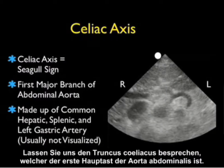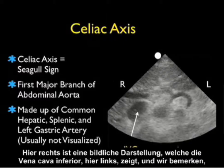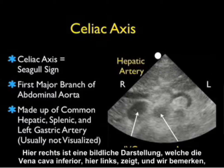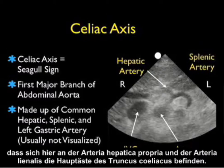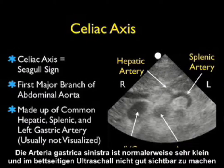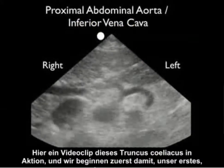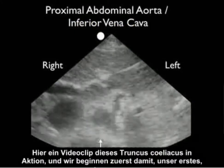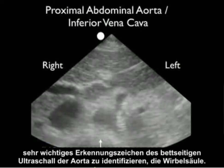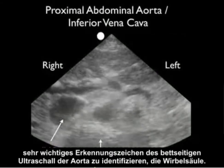Let's discuss the celiac axis, which is the very first major branch of the abdominal aorta. Here's a pictorial showing the IVC to the right of the paired aorta, shown here to the left. We note the hepatic artery and splenic arteries, the major branches of the celiac axis. The left gastric artery is usually very small and not visualized well on bedside ultrasound. Here's a video clip of the celiac axis, beginning by identifying our first very important landmark for bedside ultrasound of the aorta: the spine.